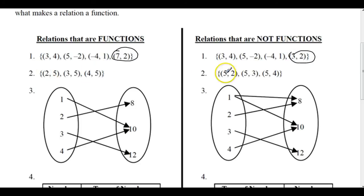All right, let's keep going. {(2, 5), (3, 5), (4, 5)}. Then we have the mapping from 1, 2, 3, 4 to outputs.